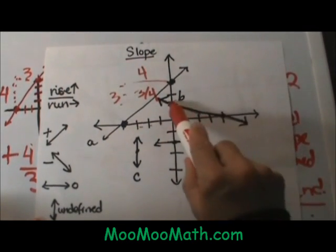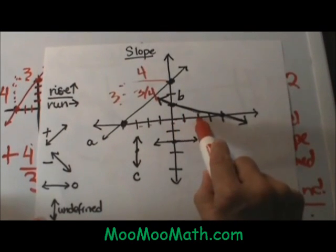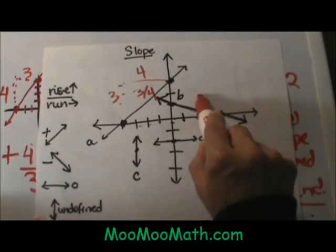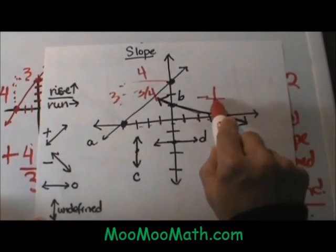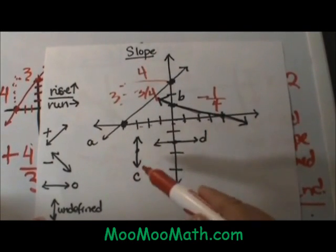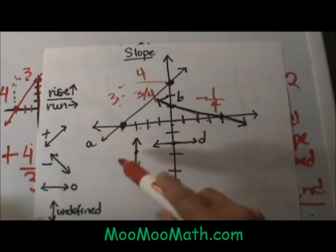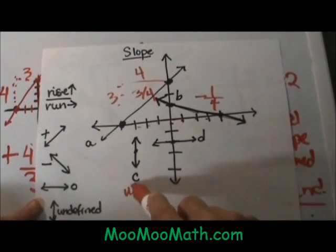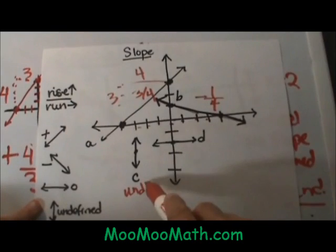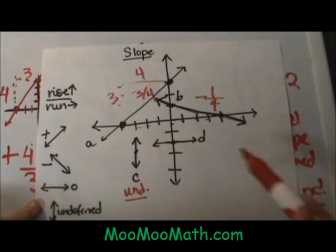The slope of our second line is down 1 over 1, 2, 3, 4. That one is negative 1 fourth. The slope of our special lines is the vertical line. Remember this one is undefined. If it goes up and down it has an undefined slope or no slope.